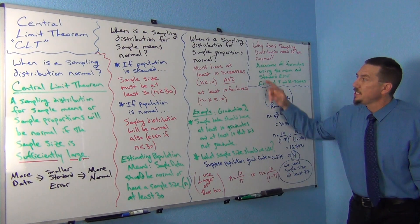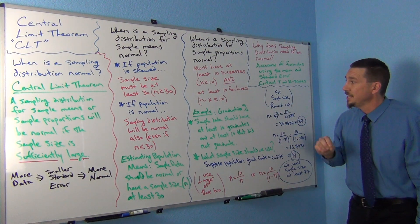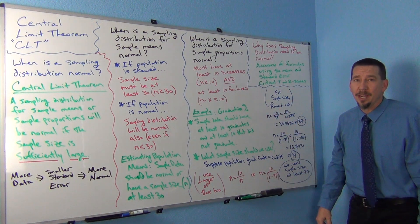So don't think that the 10 successes and 10 failures requirement means you need a sample size of 20. That's not the case. Usually you might need a sample size quite a bit bigger.